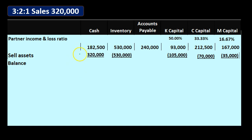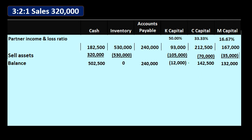Bringing down the balances: cash received brings us to $502,500, inventory goes to zero, accounts payable is pulled down unchanged. K's capital account is $93,000 minus $105,000, bringing us to a negative capital account — that's the problem. C's capital account is $212,500 minus $70,000, leaving $142,500. M's capital is $167,000 minus $35,000, leaving $132,000. K has a negative capital account because the loss allocated exceeded the starting balance.